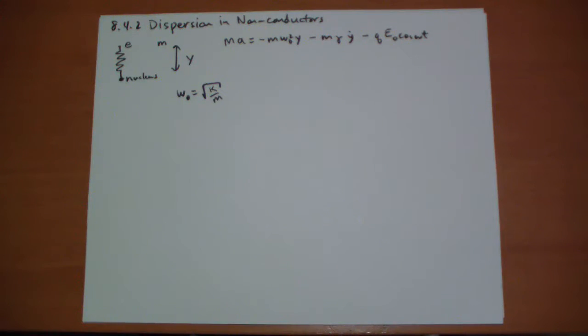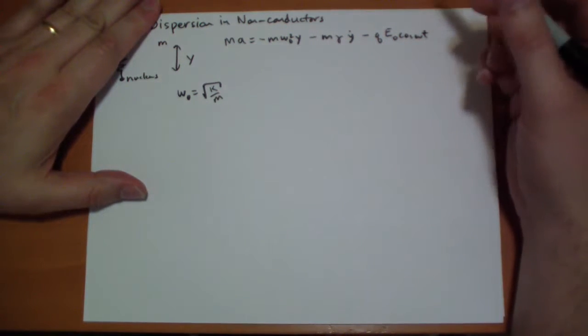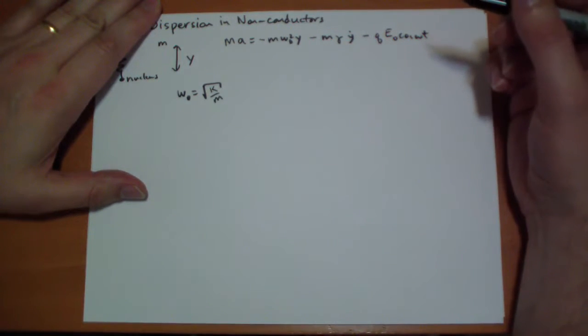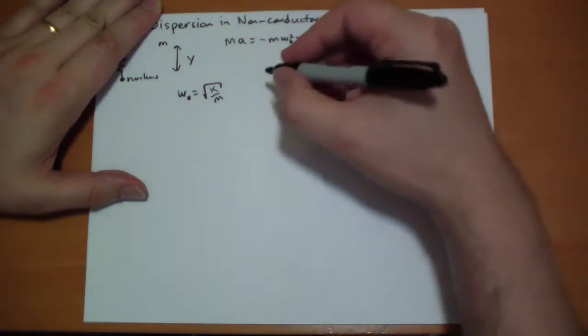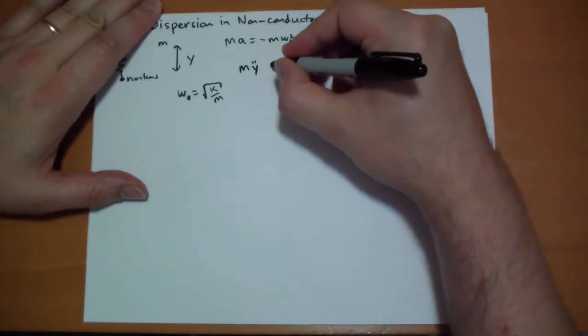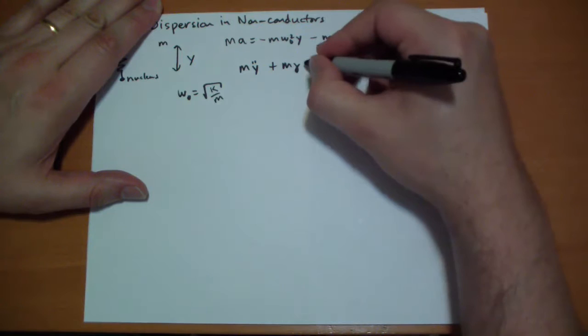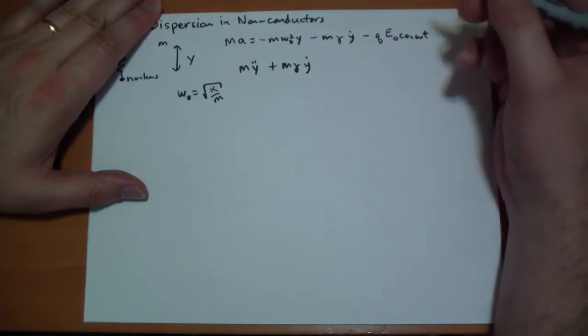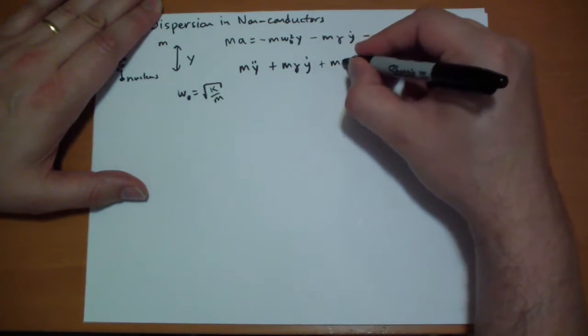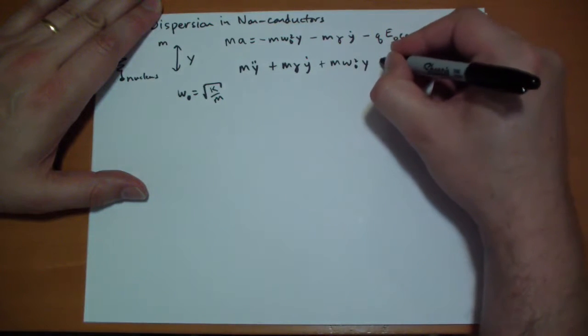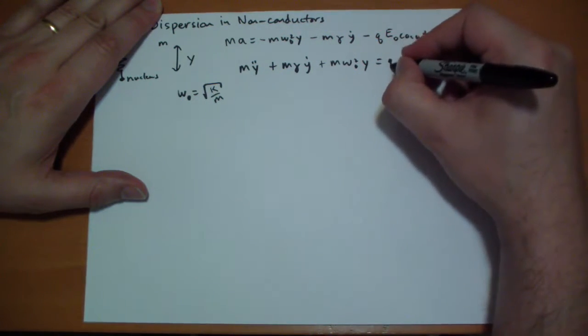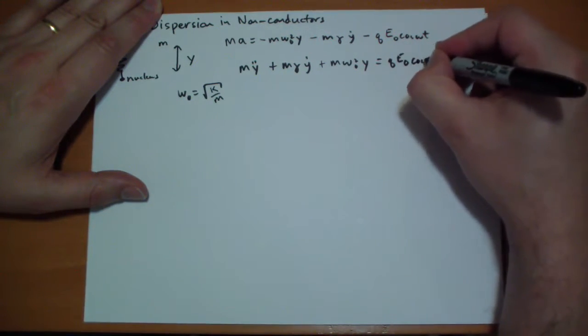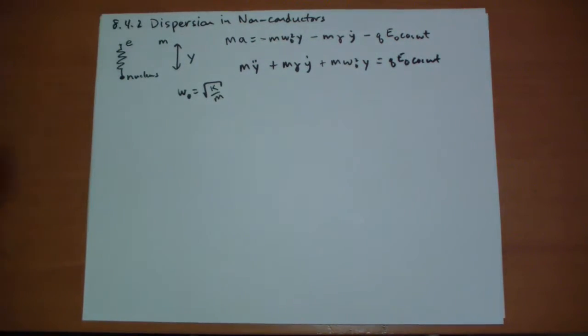So we rearrange terms and we get this equation which should be instantly recognizable as a spring equation. So we have M Y double dot plus M gamma Y dot plus M omega naught squared Y is equal to Q E naught cosine omega T.